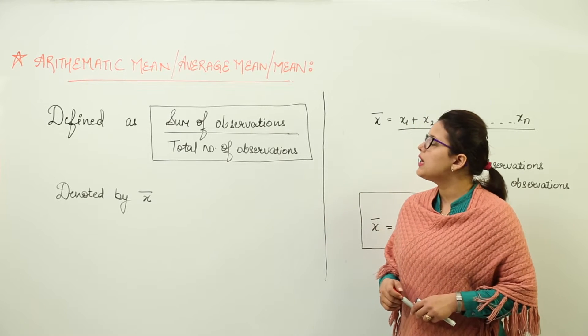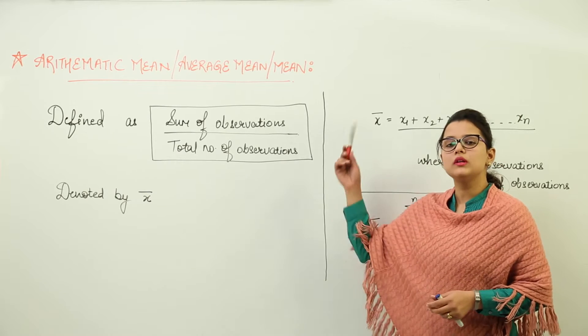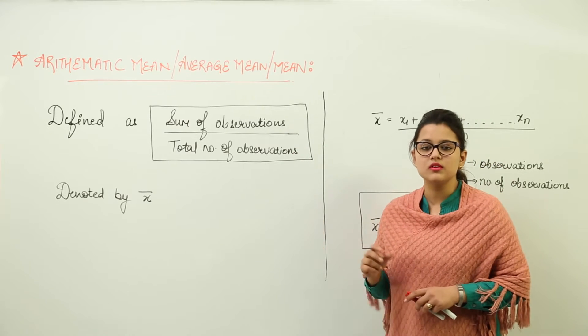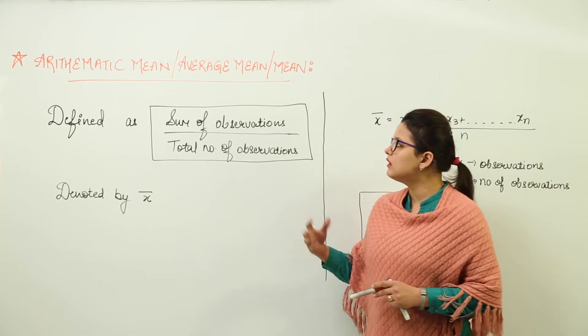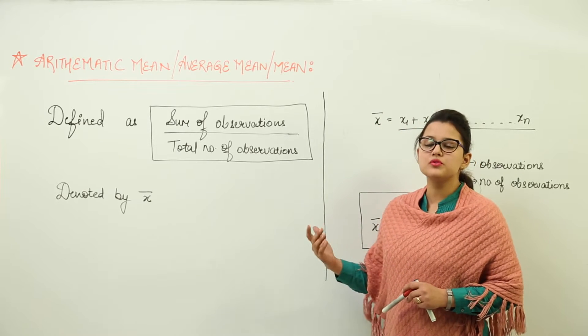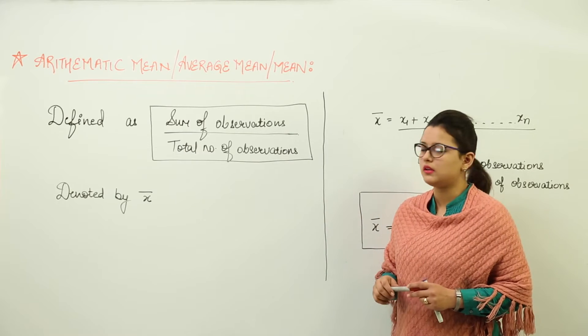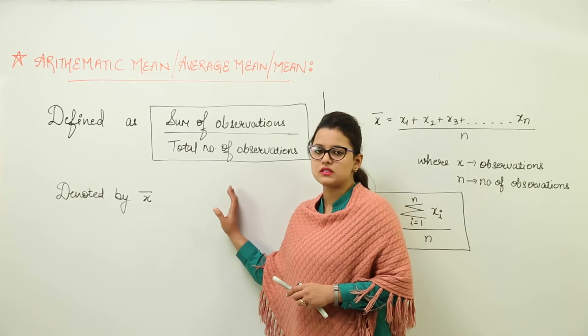Now what is arithmetic mean, average mean or mean? See all these are the same things, it's just different names are given to them. So in some books you would find it as arithmetic mean or in some books you might find it written as simple normal mean. Arithmetic mean is also same as this one.